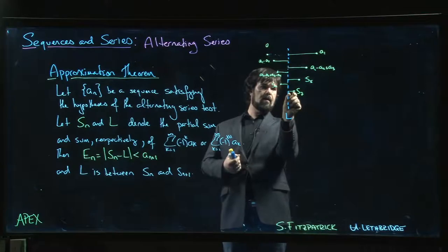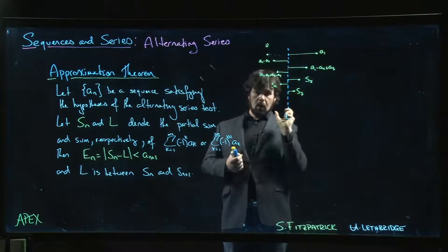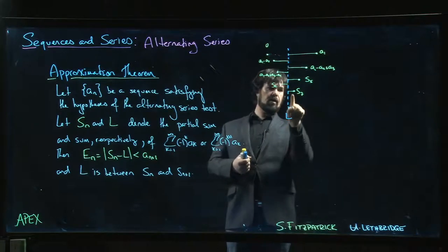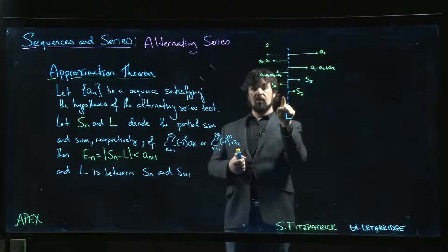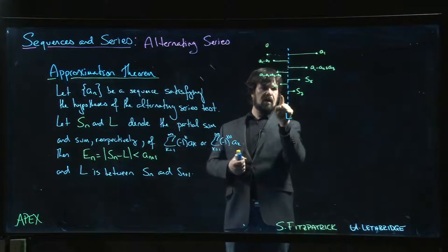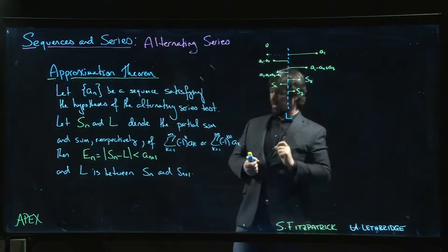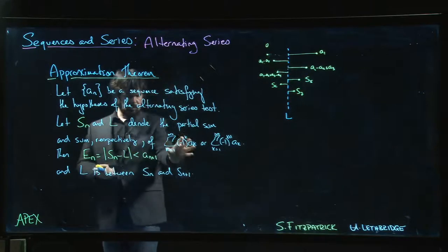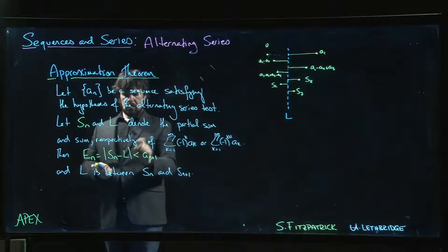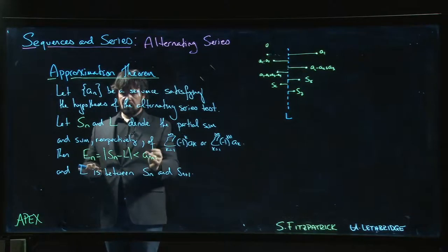That means the difference between the partial sum that you have here and the limit, it's always got to be less than the next term. Because when you add the next term, it takes you to the other side of the limit. So the difference between the limit and the partial sum, the actual series, the infinite series, the difference between them, it's always less than the next term in the sequence.